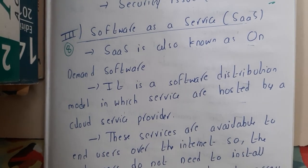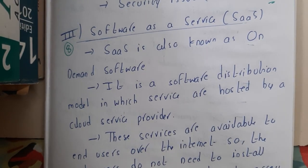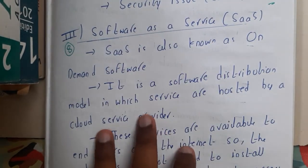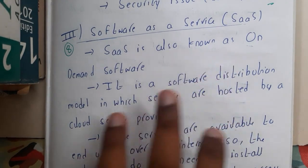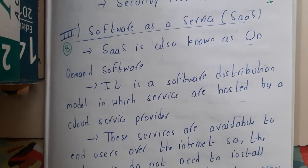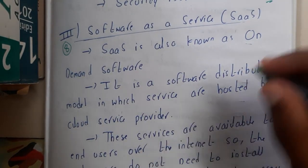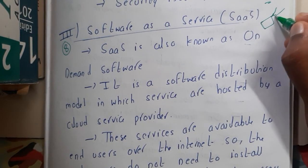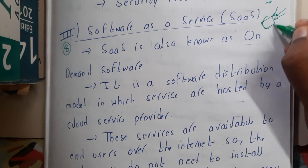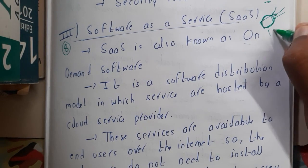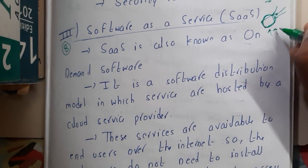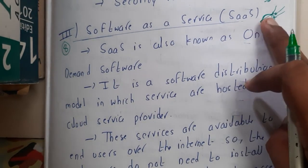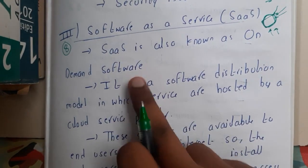Hello guys, we are back with our next lecture. In this lecture, let us go through the concept of SaaS — Software as a Service. SaaS is also known as on-demand software. Basically, we use some applications online — web applications — in which we cannot do any kind of modifications but we can use that service to do our operations, like PDF editing online or any kind of application. All those applications come under SaaS.